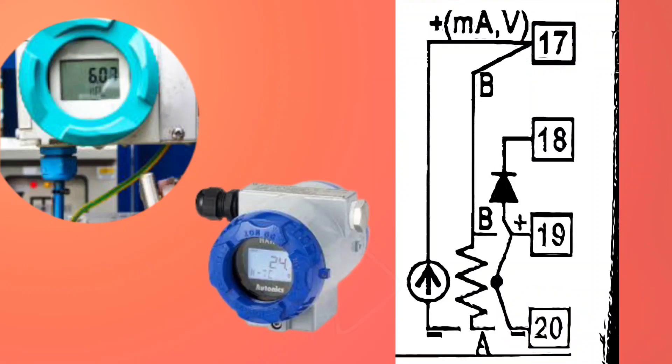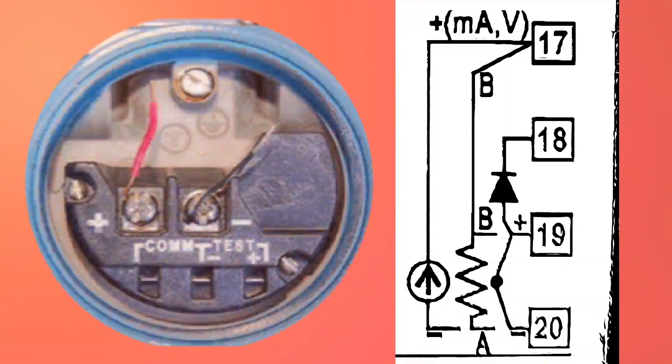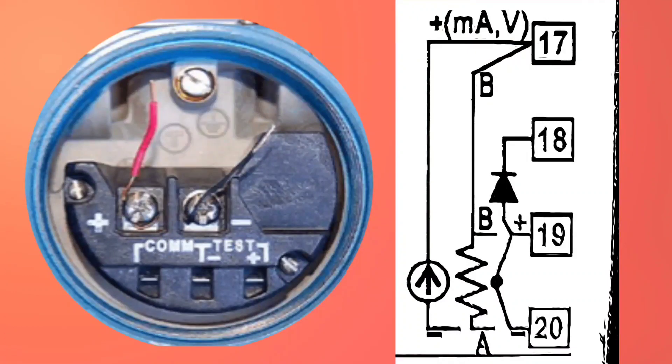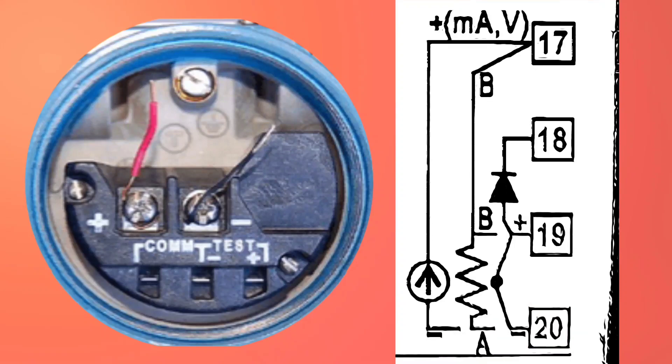For this, you can also find this current sign here. The positive will be connected to the positive of the transmitter, and the negative will be connected to the negative of the transmitter.